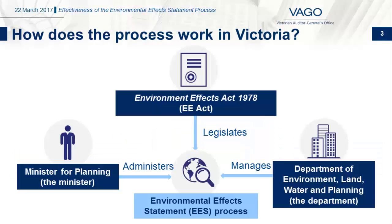In Victoria, for projects likely to have a significant environmental impact, the Environmental Effects Statement process is the main statutory mechanism for assessing environmental effects at the state or regional level. The Minister for Planning administers the EES process under the Environmental Effects Act 1978.